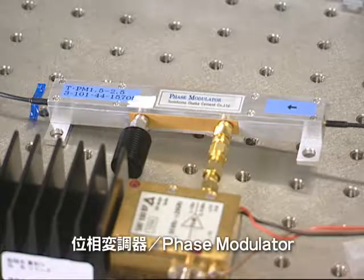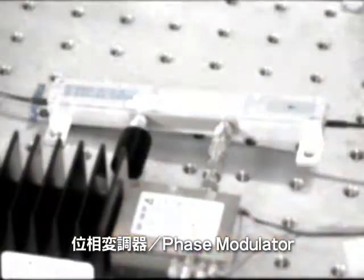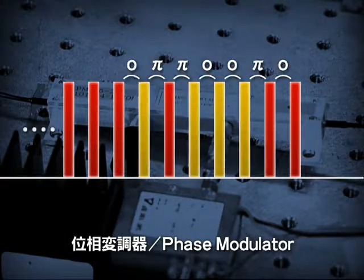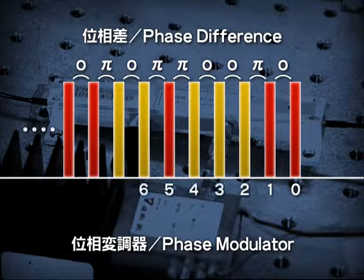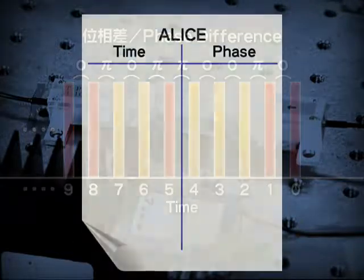The pulse stream enters the phase modulator. This equipment modulates the phase differences between the light pulses to zero or pi. Here, the decision of zero or pi is made randomly. The main feature of this method is that a secret key is created from the phase differences. Alice makes a record of which phase modulations were executed and when.